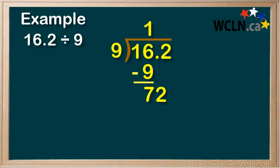Can 9 go into 72? Well, thinking back to our times tables, 9 times 8 is 72. So we put the 8 up into our quotient. 8 times 9 equals 72, and we're ready to subtract. 72 minus 72 is 0.